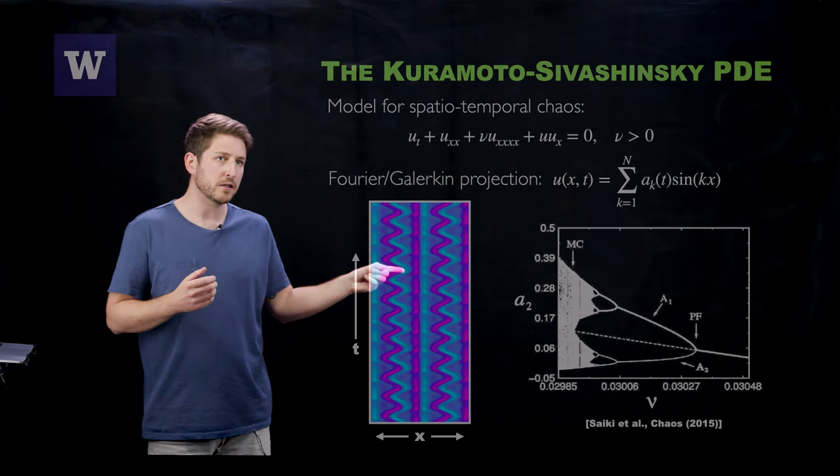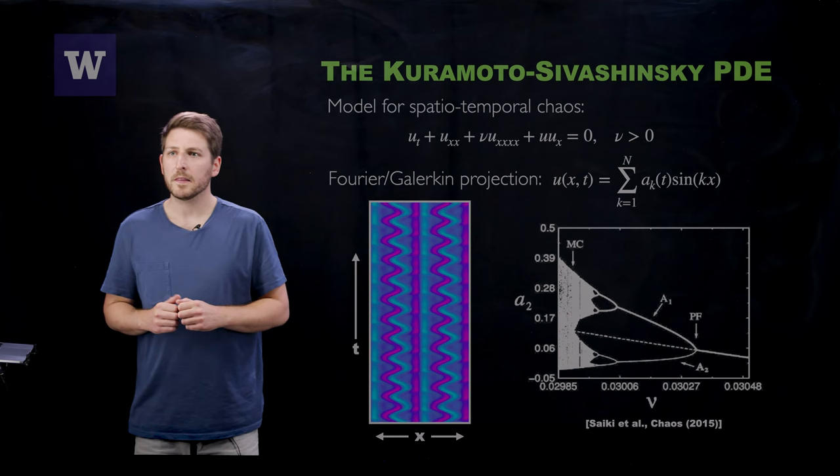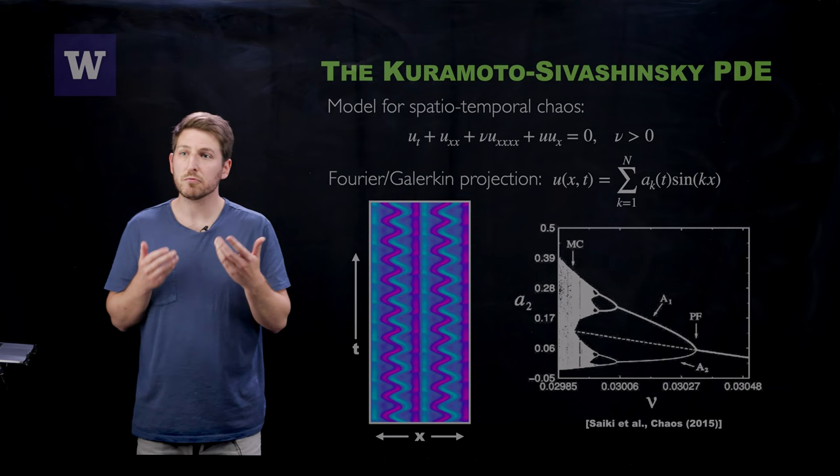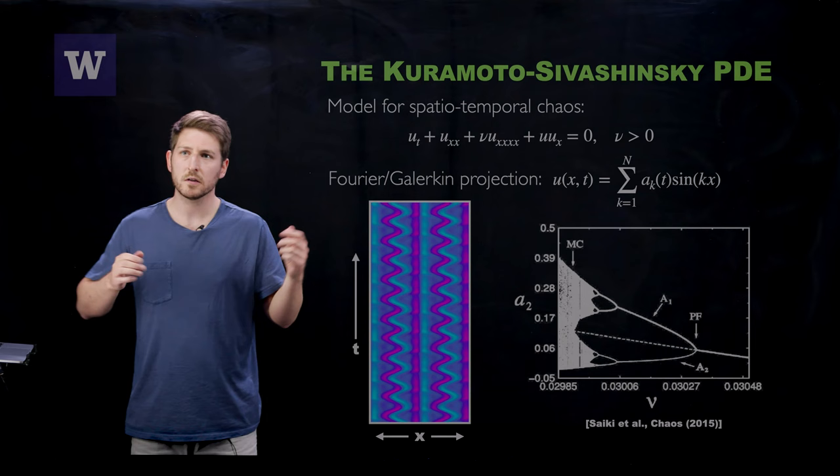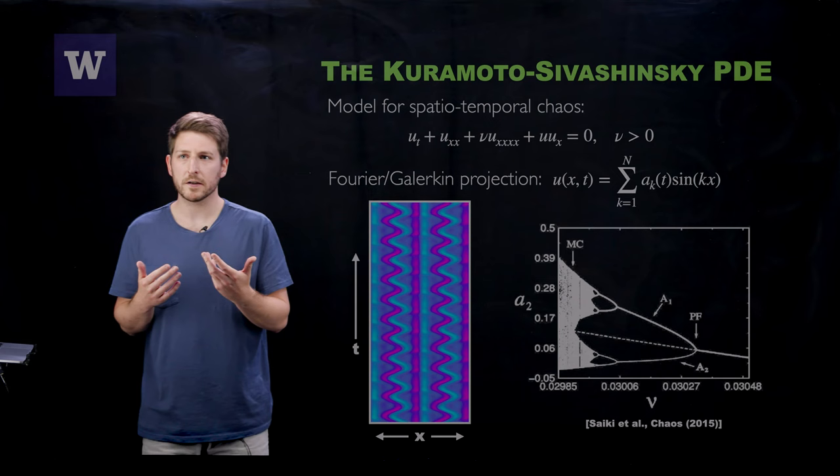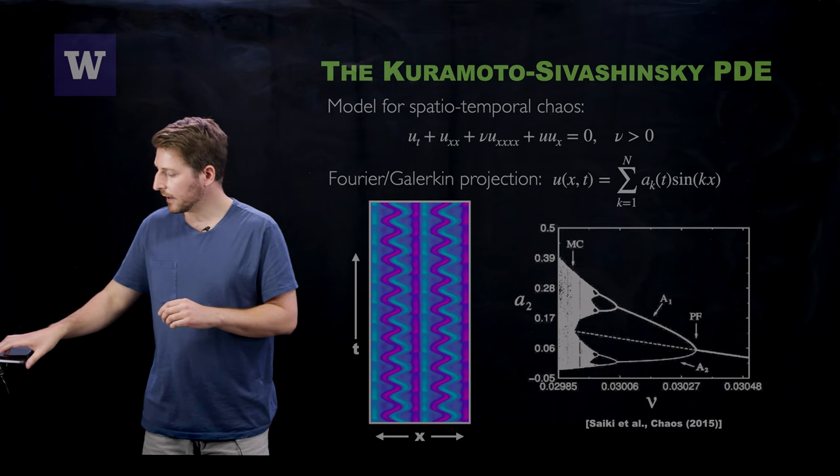And what you can do is you can see that in this region of nu values where you're experiencing this period doubling cascade, the Kaplan-Yorke dimension is approximately two, telling you that the chaotic attractor is really just two-dimensional, even if you're using a number of modes to describe this projection. That means that your Poincaré section data should be described by a one-dimensional attractor.